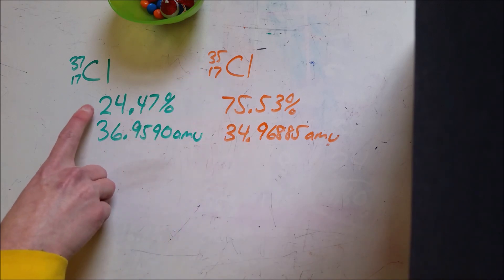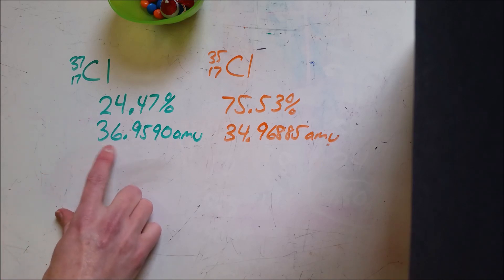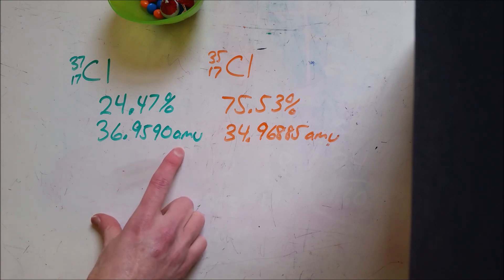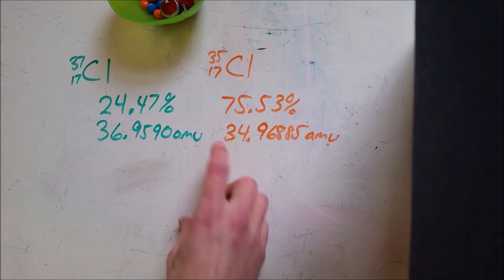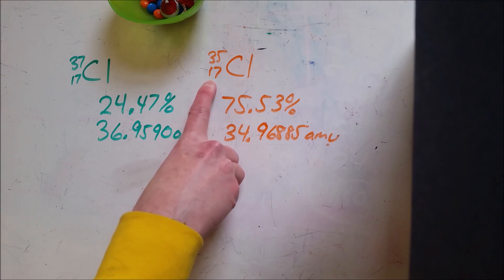So Chlorine-37 occurs 24.47% of the time. Each Chlorine-37 has a mass very close to 37, 36.9590 atomic mass units, where an atomic mass unit is approximately the mass of one proton or one neutron.